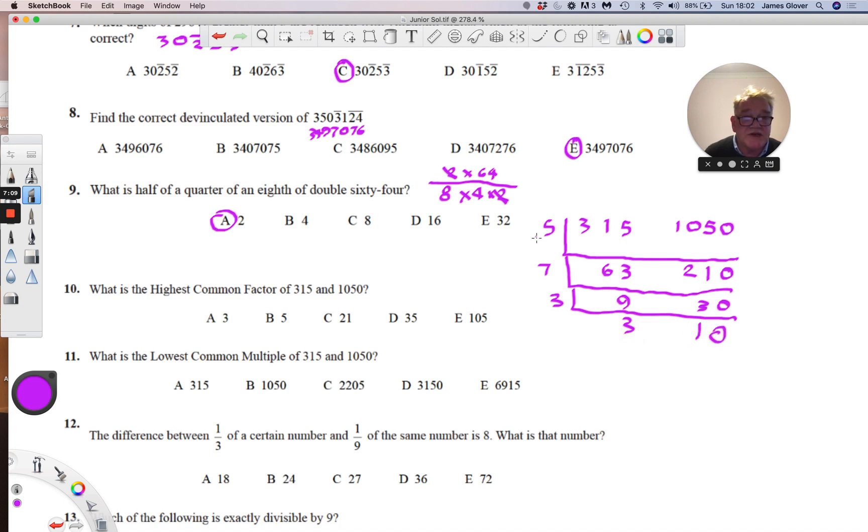If we vertically multiply these numbers together, we will arrive at the highest common factor. 5 times 7 times 3 is 105. So it's answer E.